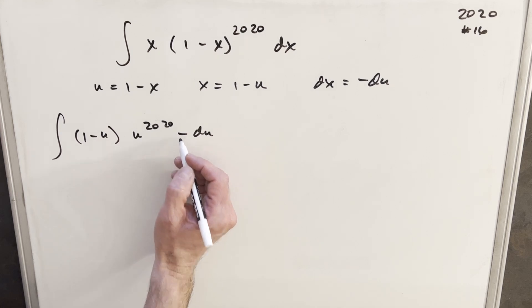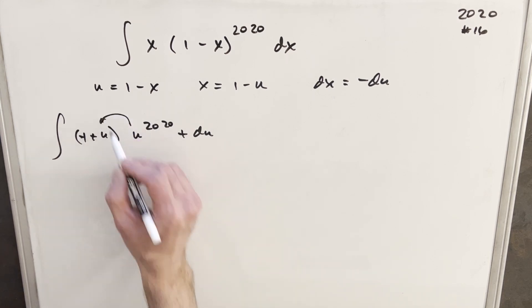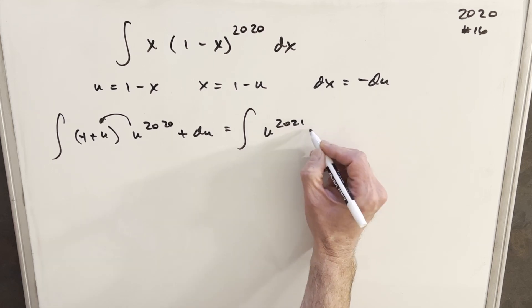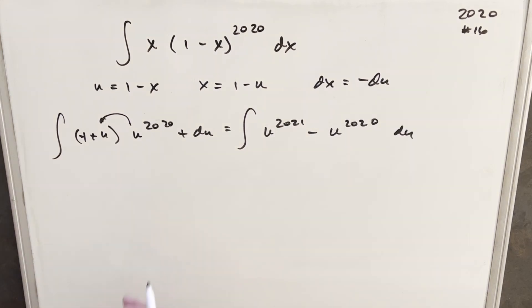And then just because this minus is, I don't like this minus over here, so what I'm going to do, we'll just make this a plus and change the sign over here. So then just multiplying this out, what we're going to see is we're going to have u to the 2021 minus u to the 2020.